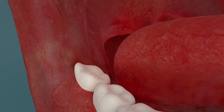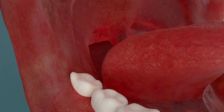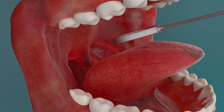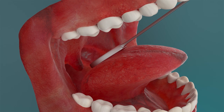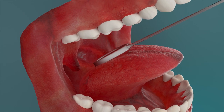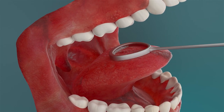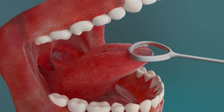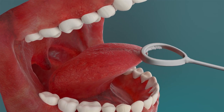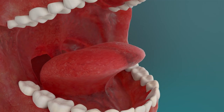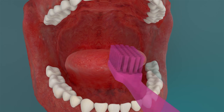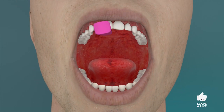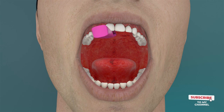The tongue is home to countless dead cells of the oral cavity and sulfur-producing bacteria, which can cause bad breath among other things. In particular, the rear part of the tongue should be cleaned with a tongue scraper. Finally, you can clean the cheeks, palate, and other areas of the oral cavity, where dead cells of the oral mucosa are also present.